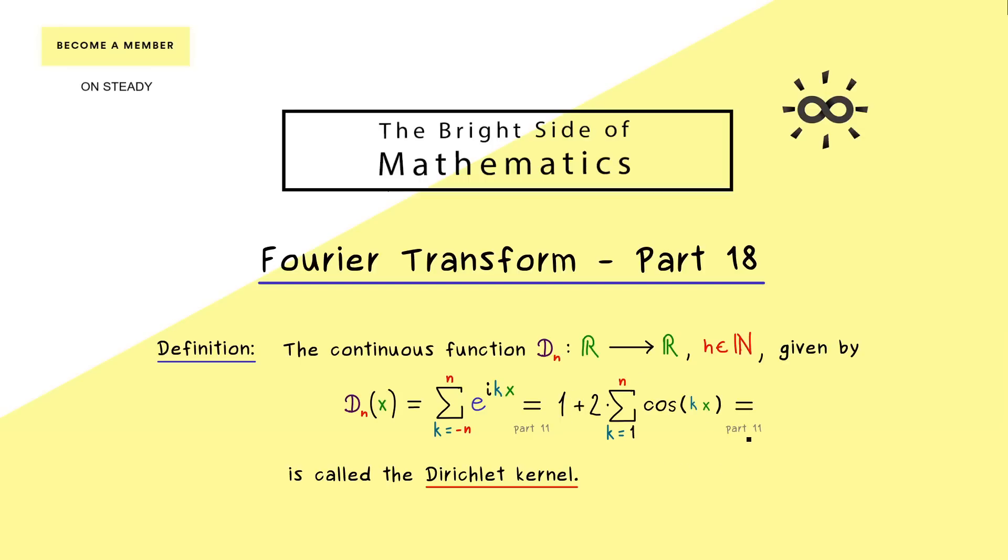And in addition to that, we can also reformulate it to get an expression without any sum in it. In fact, this one is also explained in part 11. And there what we get is a sine function in the numerator containing an n and a sine function in the denominator. However, this one is quite simple because it's just sine of one half x, so there is no n involved.